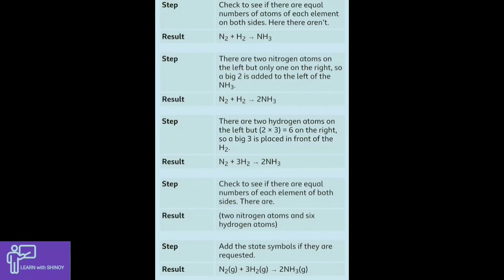Here, from nitrogen and hydrogen you are getting ammonia, but the equation is not balanced. There are two nitrogen atoms on the left side and only one nitrogen on the right side. So we put 2 in front of NH₃ on the right side and a coefficient of 3 in front of H₂ on the left side.